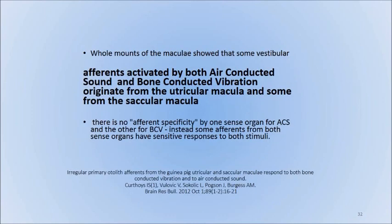You can activate the otolith organs by vibration or air-conducted sounds of certain characteristics, frequencies, and intensities. Afferent activations by both air-conducted sound and bone-conducted vibration originate from the utricle macula and some from the saccular macula. The key point is that we have the possibility of activating selectively or preferentially the utricle versus the saccule depending on the characteristics of the tones we apply to the patient.